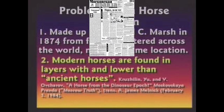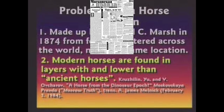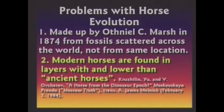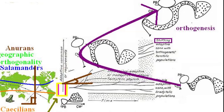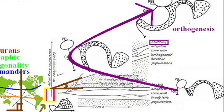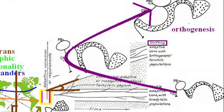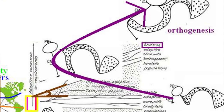Although Moskovskaya Pravda is a Russian supermarket tabloid, Krutzhilin and Ovcherov were discussing this same overabundance of fossils when they noted that modern-looking horses are often found in strata with their three-toed sister clades. So while orthogenesis was soundly disregarded, this overabundance of fossils is exactly what Darwin had predicted in Origin of Species.